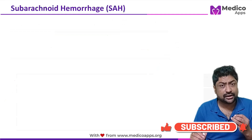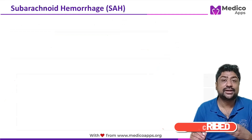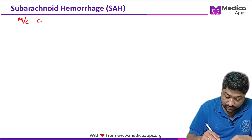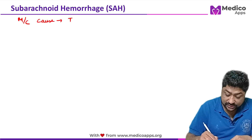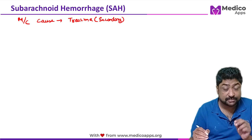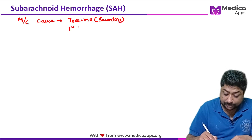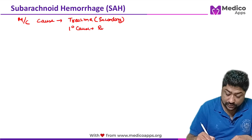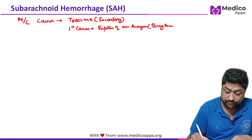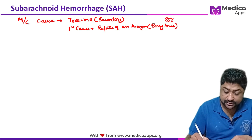SAH is a very important topic. Let's cover the most important points. The most common overall cause is trauma — but that is a secondary cause. In the examination, remember to note what is being asked. The most common primary cause is rupture of an aneurysm, specifically a berry aneurysm, which accounts for approximately 85% of primary cases.